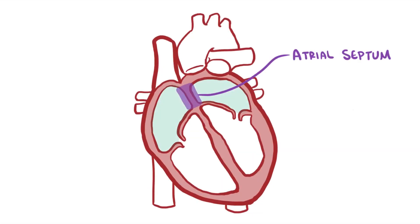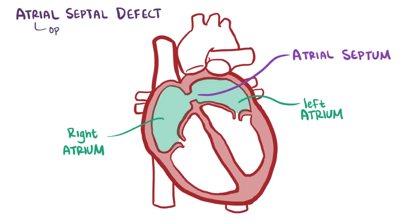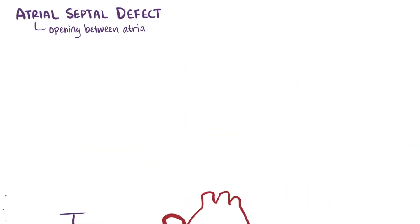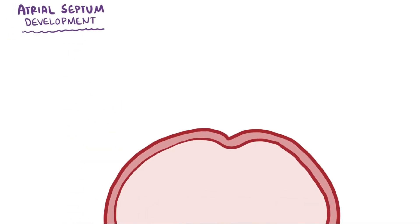The atrial septum separates the right and left atrium of the heart, and an atrial septal defect describes where there's some opening in a baby's heart between these two upper chambers. But how does this opening form? Well, let's first run through how the septum develops in the first place.